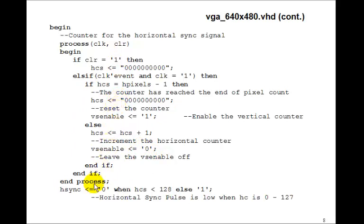So to calculate the horizontal sync pulse, well, that's just going to be 0 when the horizontal counter is less than 128, else 1. So this statement will give us the horizontal sync pulse. Remember, it's low when the counter is between 0 and 127.